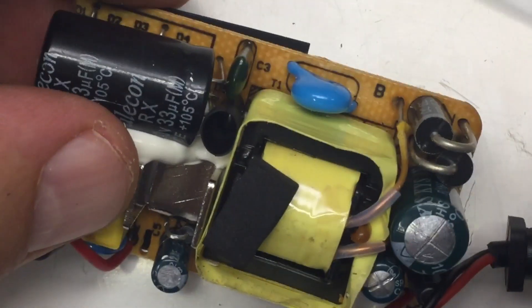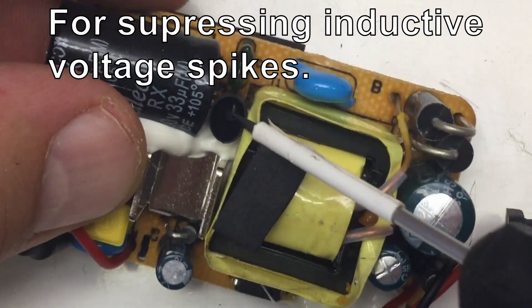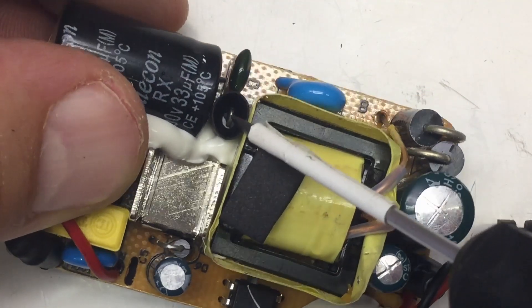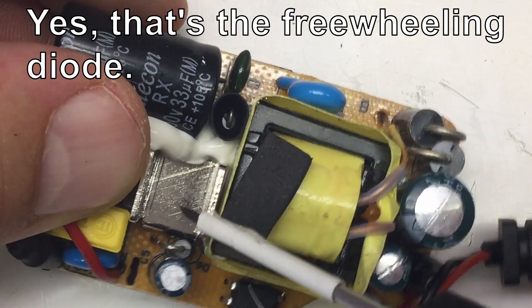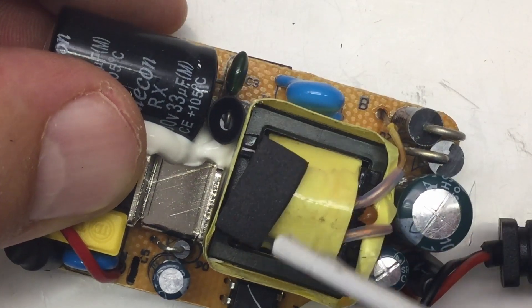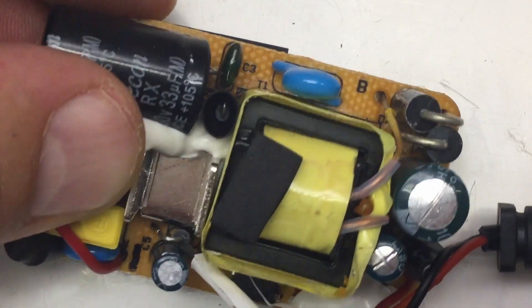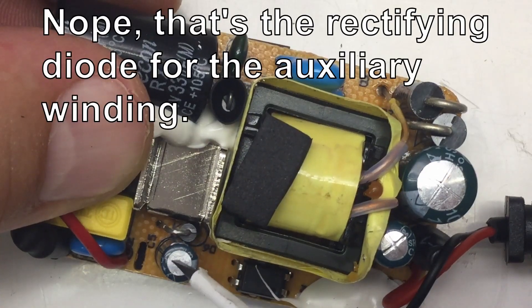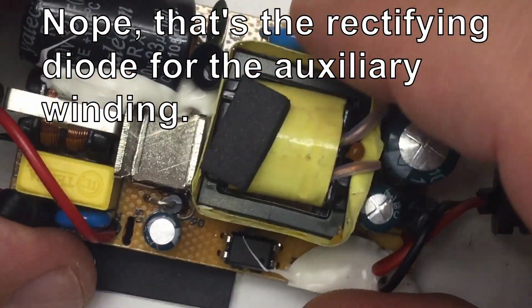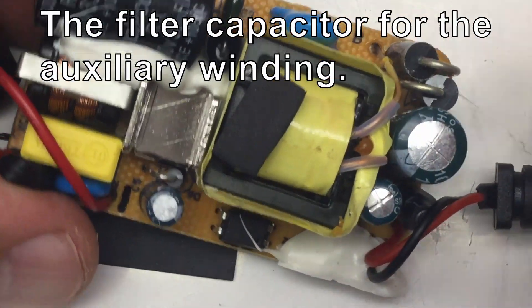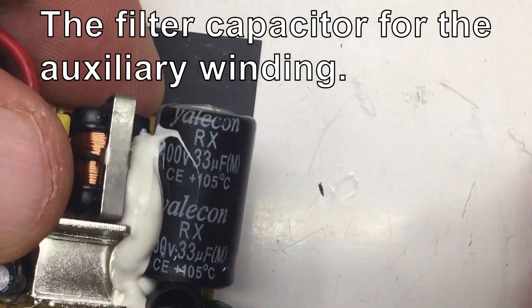Another capacitor. This is probably just a freewheeling diode for the step down converter here. Or maybe this is a freewheeling diode. Here's another capacitor. Here's another capacitor, which is not bulging. This one is bulging too.